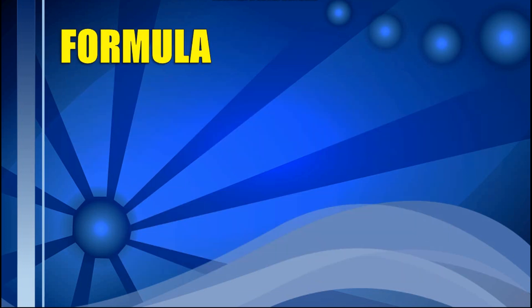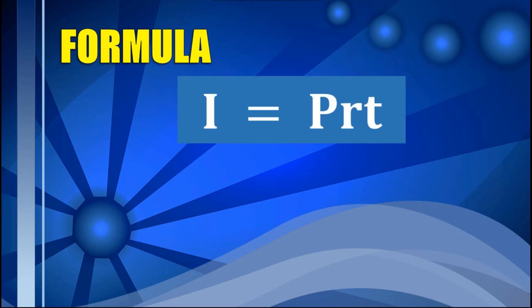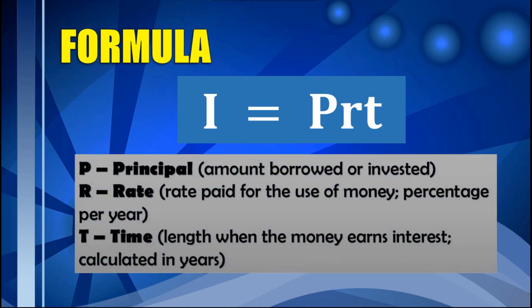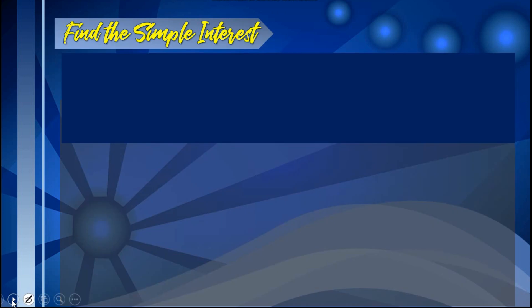To compute for the simple interest, we follow the formula: I equals P times R times T, where P stands for the principal — the amount borrowed or invested; R refers to the rate — the percentage per year paid for the use of money; and T stands for time — the length of time the money earns interest, calculated in years.